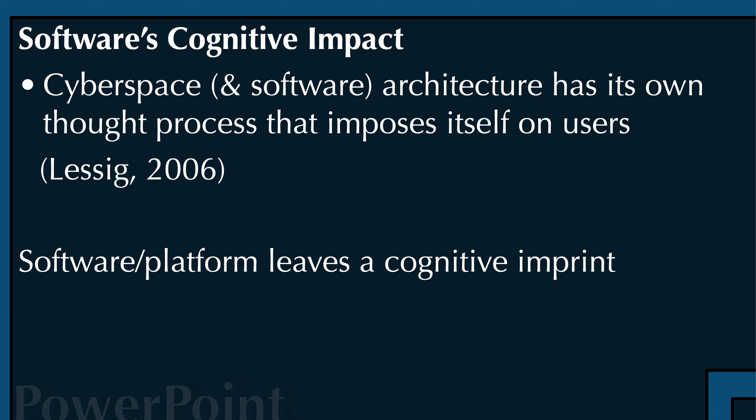According to Lawrence Lessig, cyberspace and software architecture has its own thought process that imposes itself on users. When you use a piece of software — say you double-click on icons or use a top menu to open a file — the software constrains how you use it. There are only a couple of ways to start a piece of software; you can't just make it open magically.